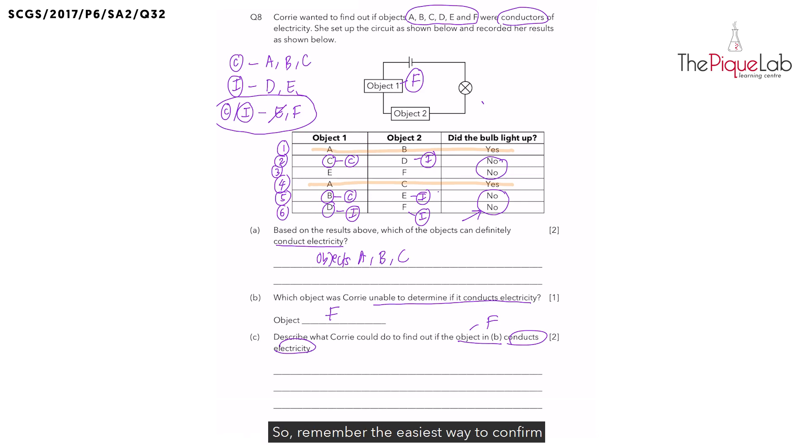So remember, the easiest way to confirm an object is a conductor is if the bulb lights up. So I should pair it with an electrical conductor. Let's write that down. I'm going to test object F with a known conductor.